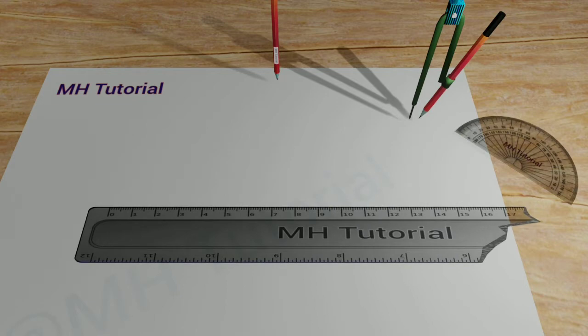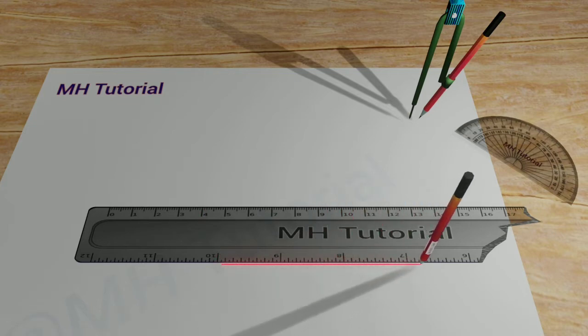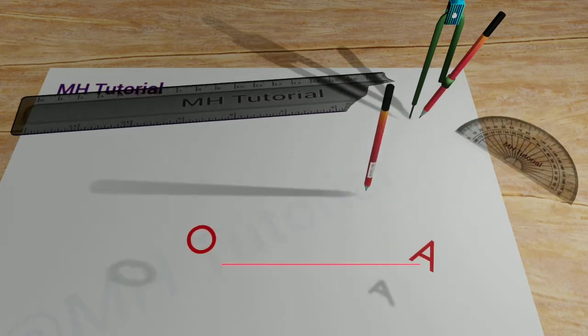First of all, with a scale and a pencil, a line segment is drawn on the middle of the page. The two endpoints are named O and A.